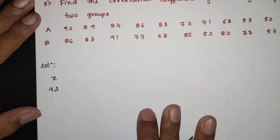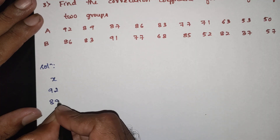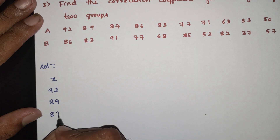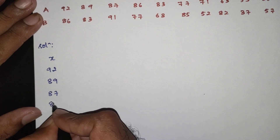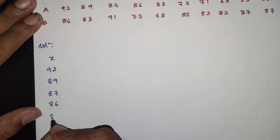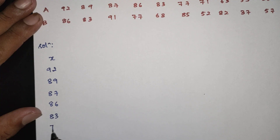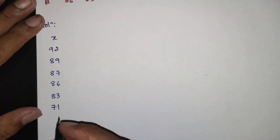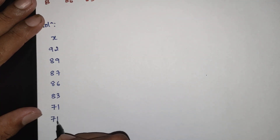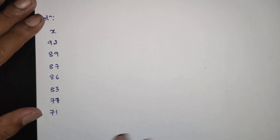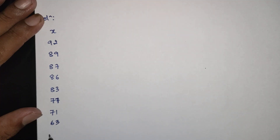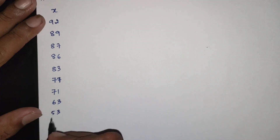The X values are: 92, 89, 87, 86, 83, 77, 71, 63, 53, 50.